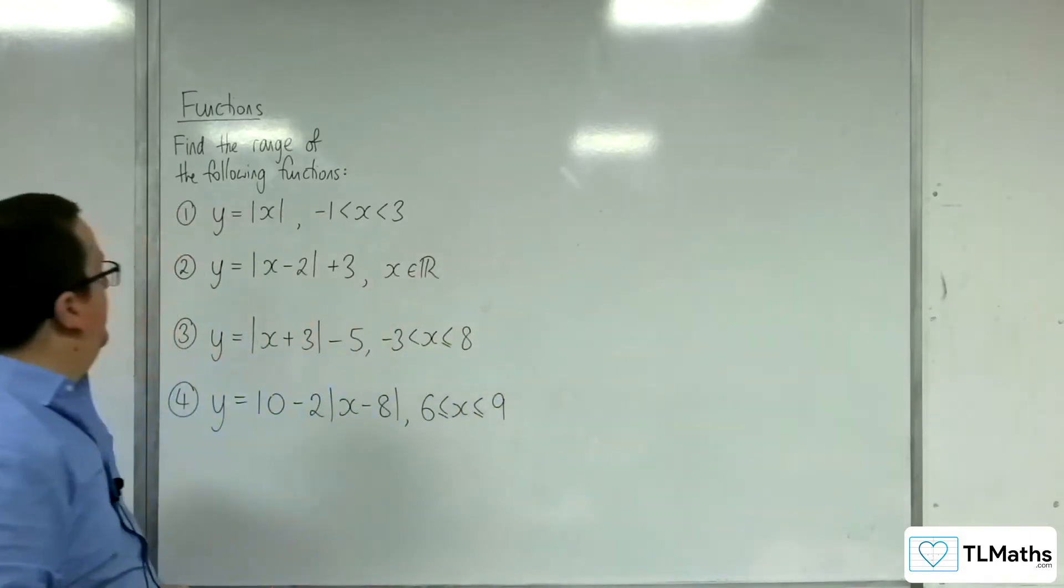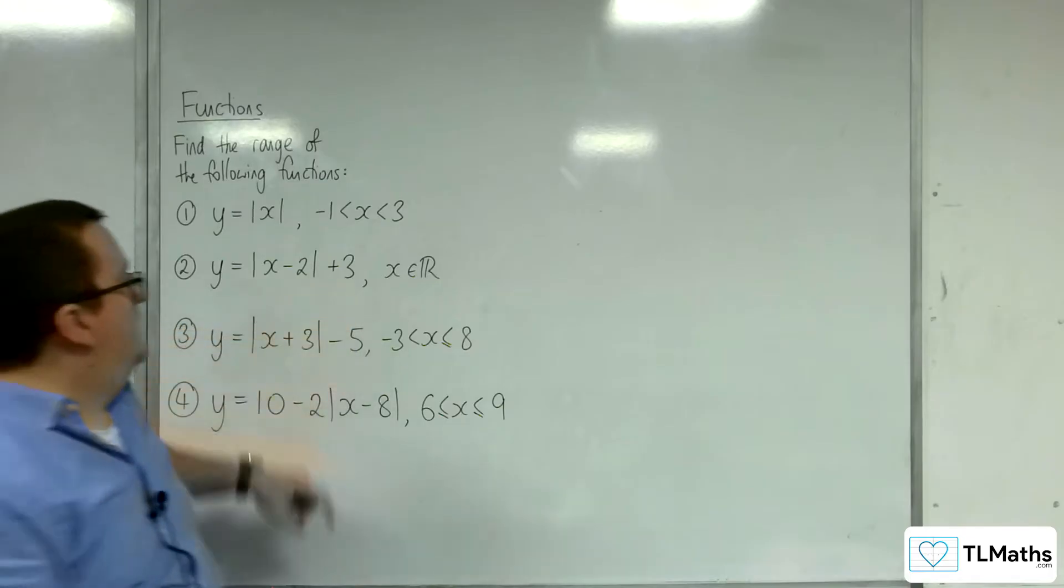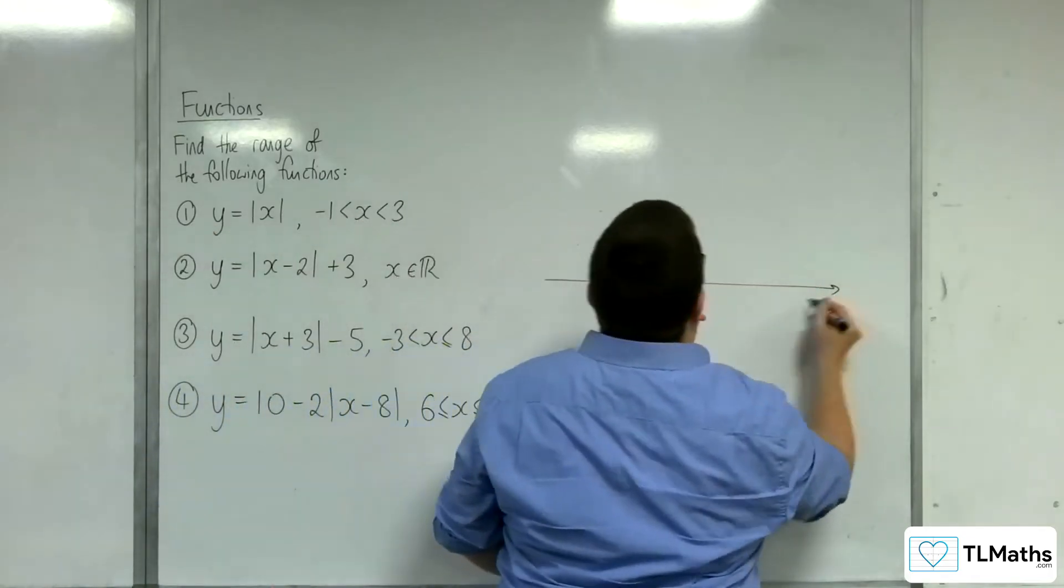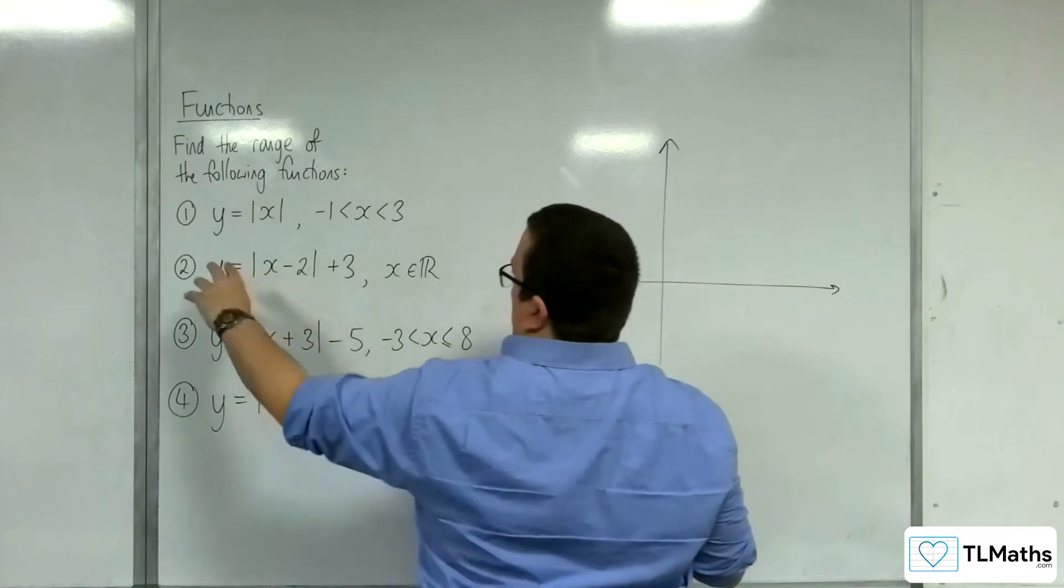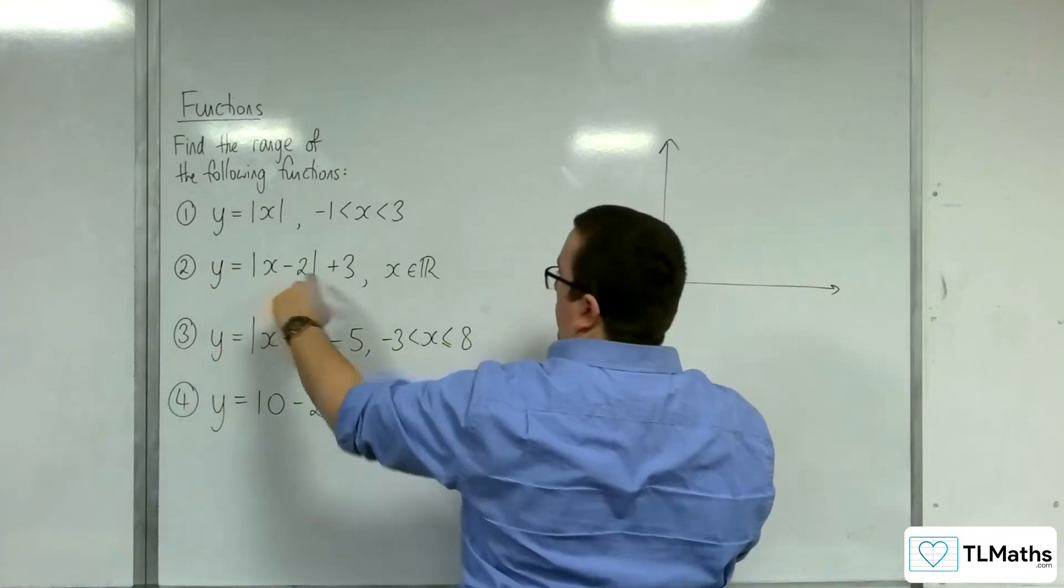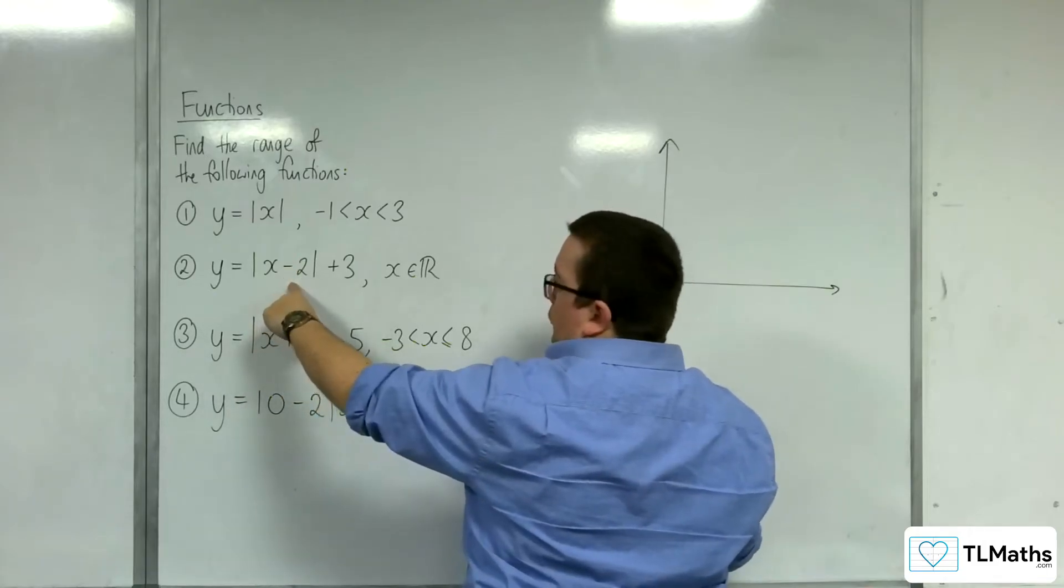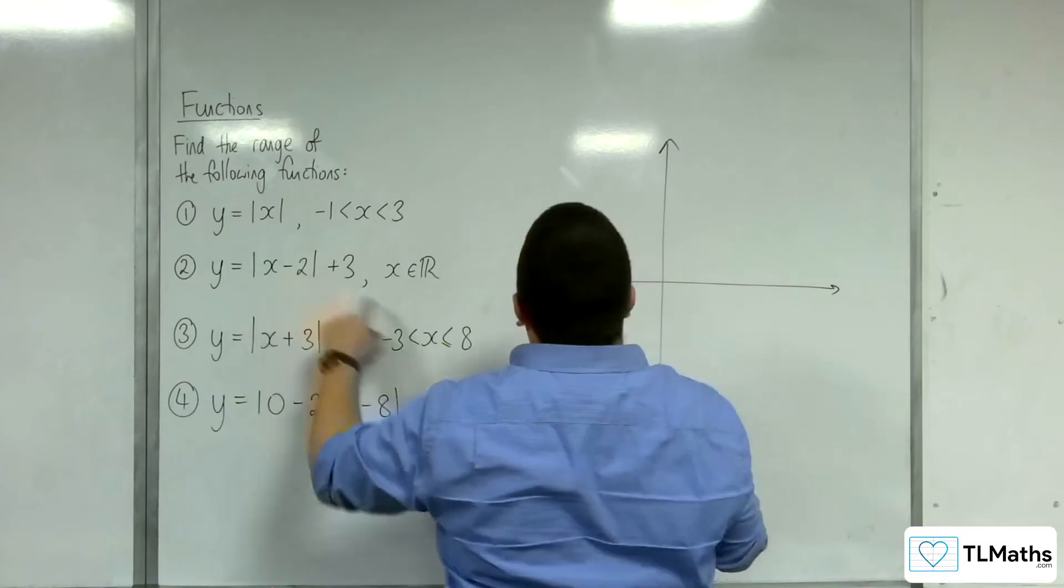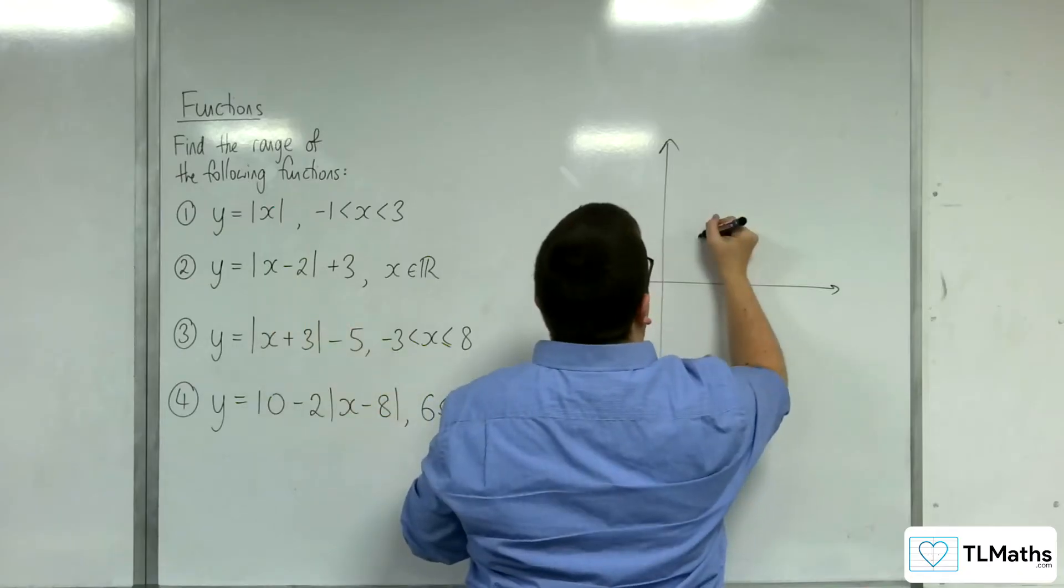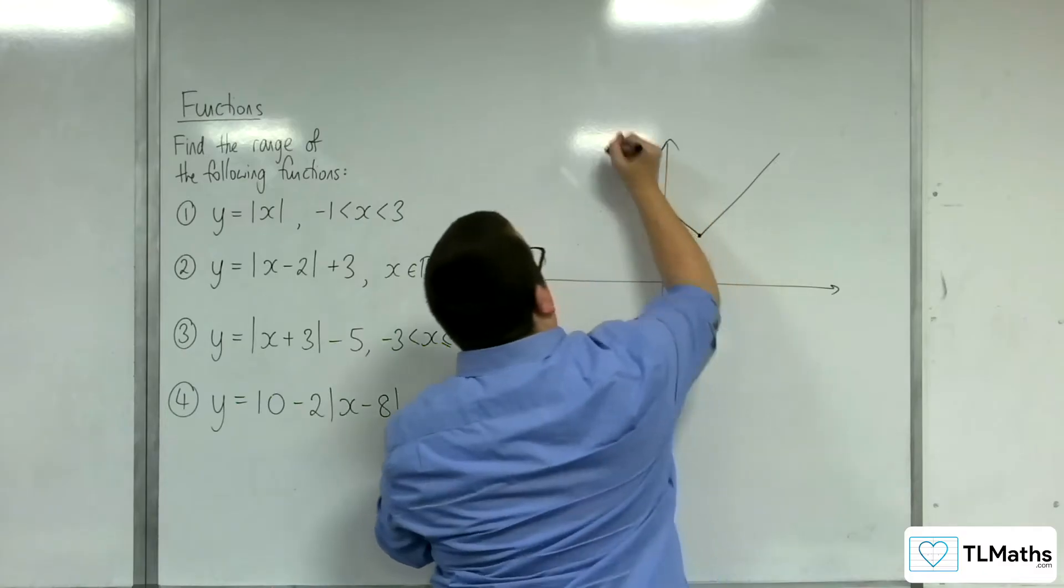Right, let's look at number 2. So y is equal to the modulus of x take away 2 plus 3. So let's sketch that first. So this is a modulus function with its vertex at 2, 3. Remember, completed square form. Inside the modulus changes sign, the one outside stays the same. So 2, 3, 2 along 3 up, and then you've got your modulus graph. Looks something like that.